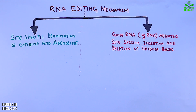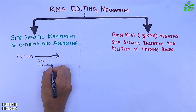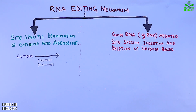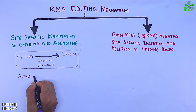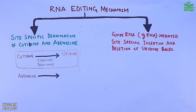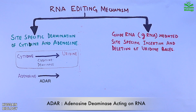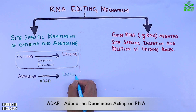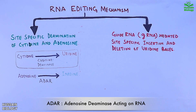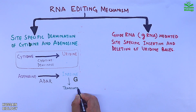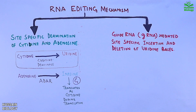In the first mechanism, cytidine is acted upon by cytidine deaminase enzyme and converted into uridine. In the deamination of adenosine, adenosine is acted upon by ADAR and converted into inosine. This inosine is read as guanosine and is translated as cytidine during the translation process.